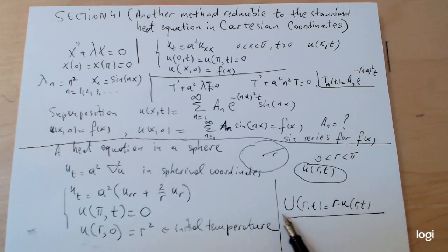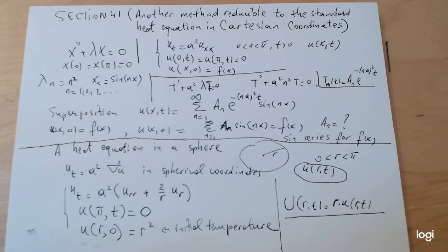We're going to see on the second part how this works, but again, as a cliffhanger, the main idea is to make a substitution to construct a problem in a different variable, U(r,t), which equals r times u(r,t), our original temperature for the sphere.